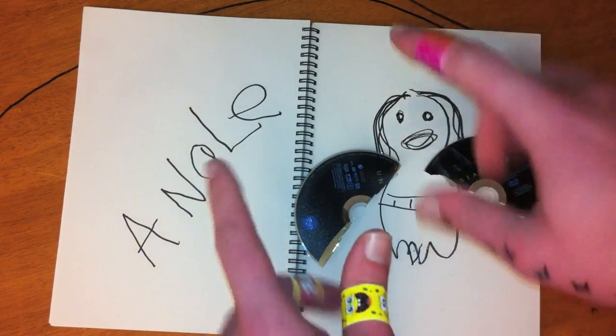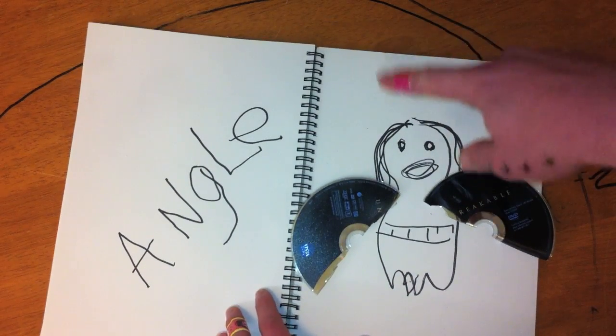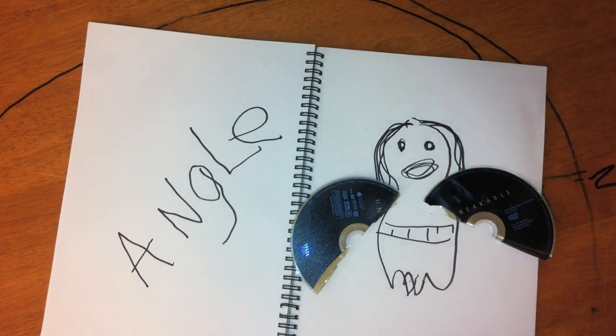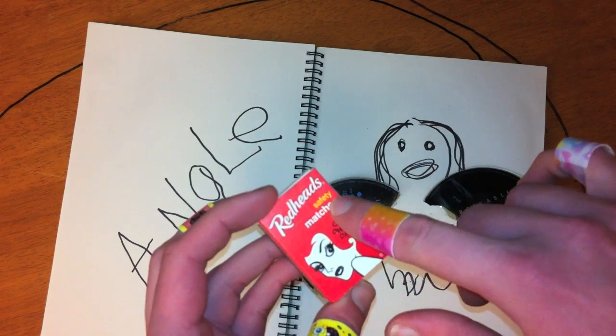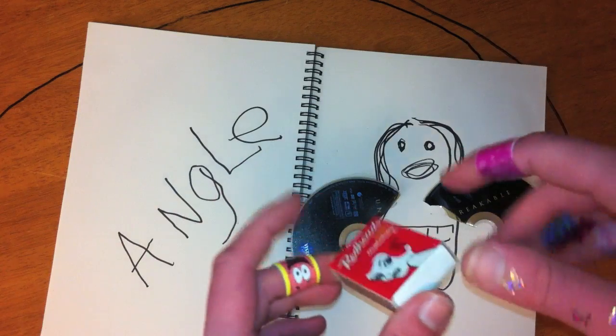Now, the last thing we're going to put in there is the halo above the angel's head. And for this, we're going to need some matches. Now, don't worry, these are safety matches, so it's okay.